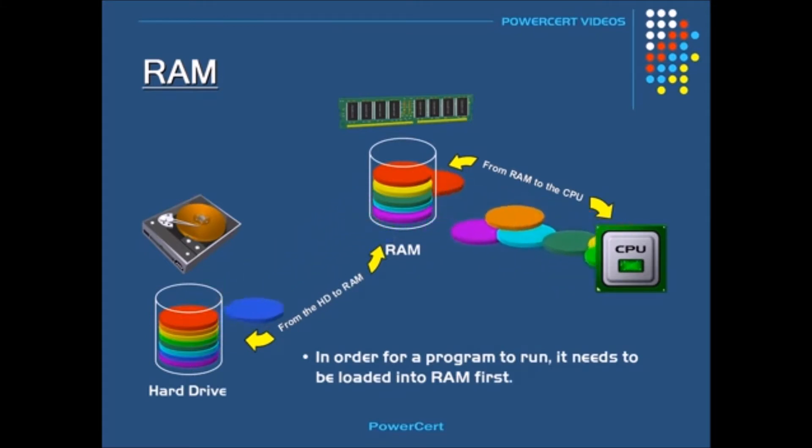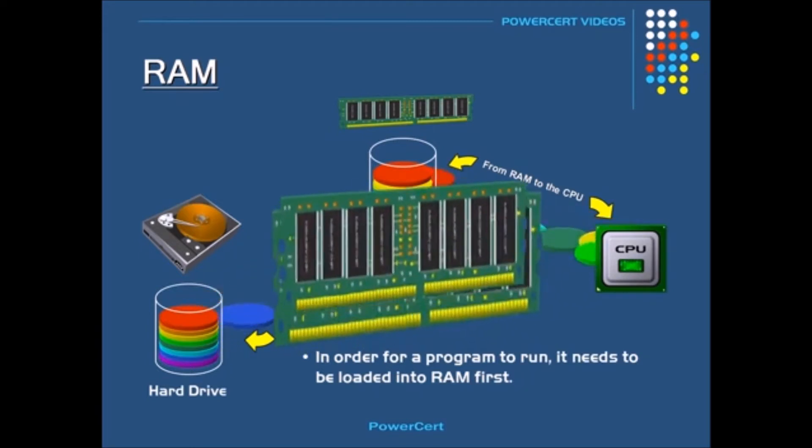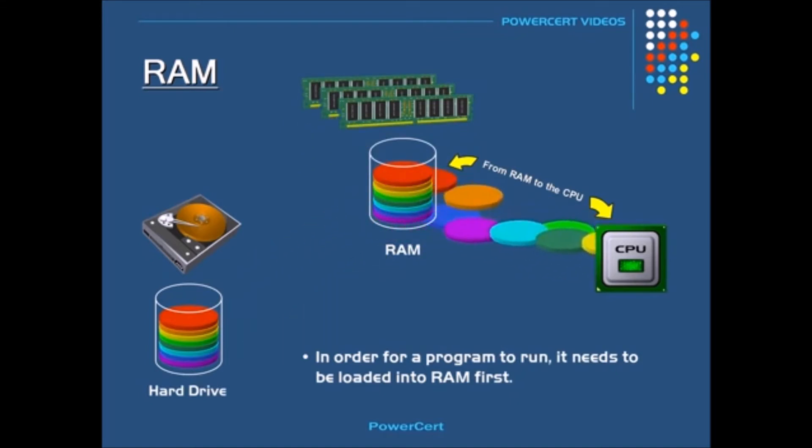This RAM is made up of thousands and millions of capacitor and transistor combos, which make a memory cell. Whenever you charge a capacitor, it represents a one in binary code, and an uncharged one represents a zero. Thousands of these ones and zeros represent the data that you are looking at.